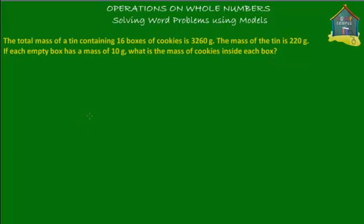Let's first try to visualize the information that we've got here. A tin has got 16 boxes of cookies and each box has got cookies. So there are three things: a tin, boxes, and cookies. There are cookies inside boxes and the boxes are inside a tin.